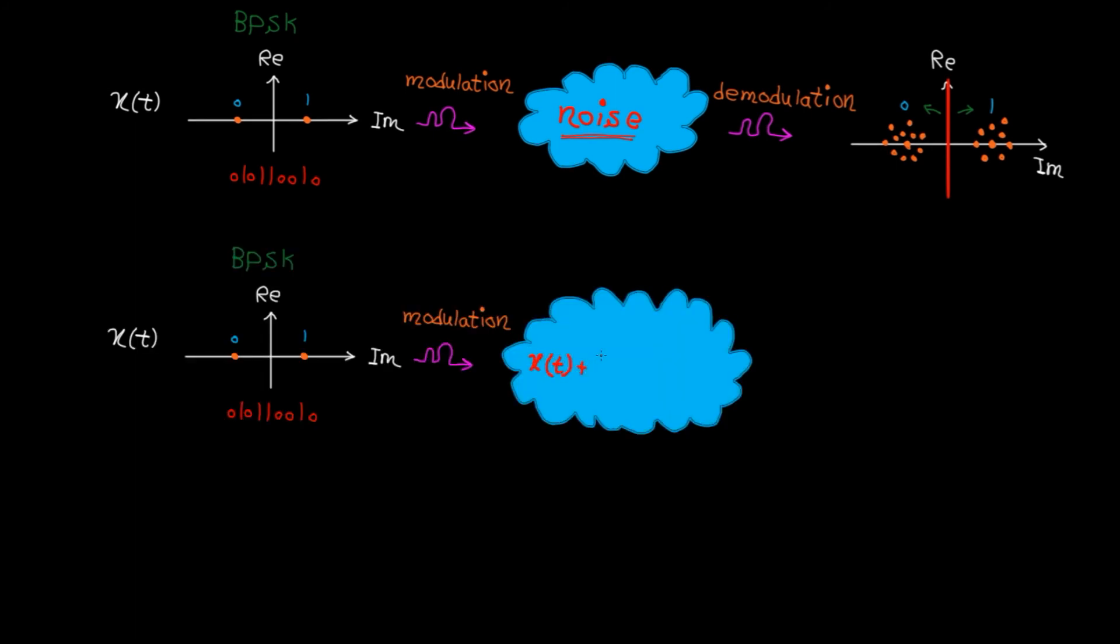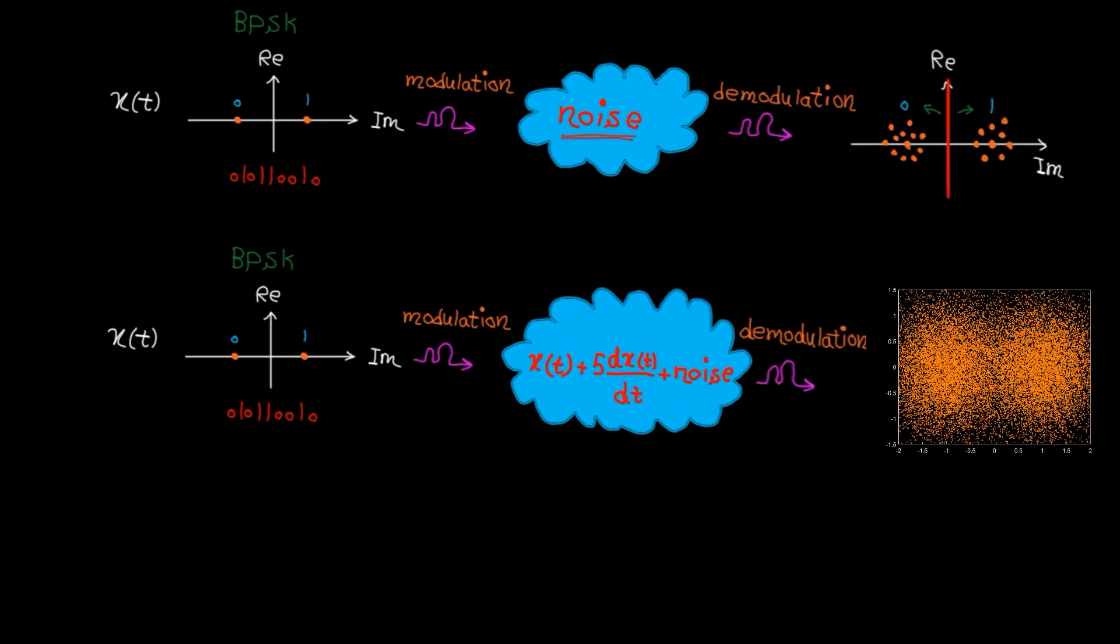Now let's consider the channel from the previous example plus white Gaussian noise. In this case, after we demodulate the received signal, we get this. As you can see, the received messages are all over the place. Let's zoom in around the origin to see how bad the situation is.